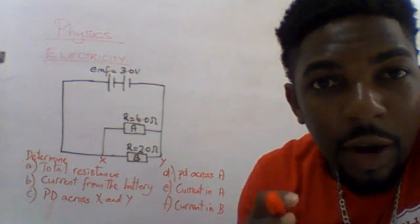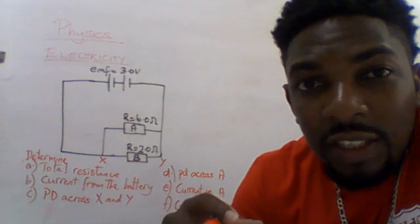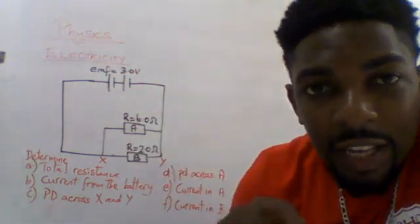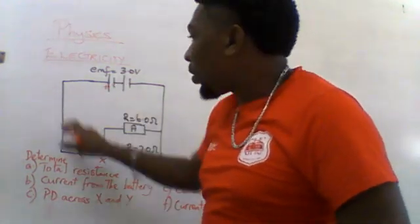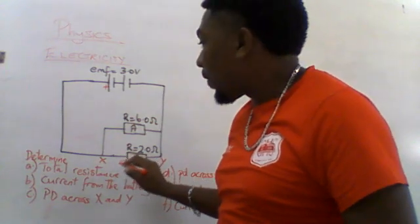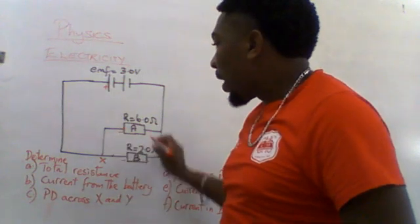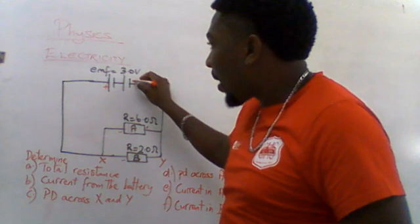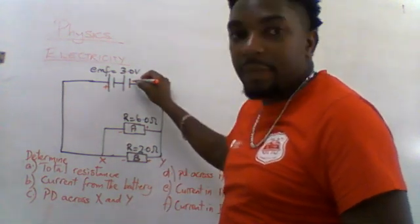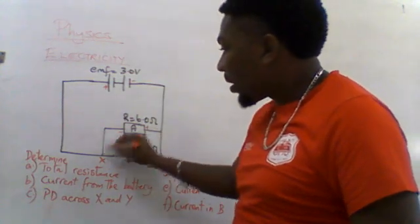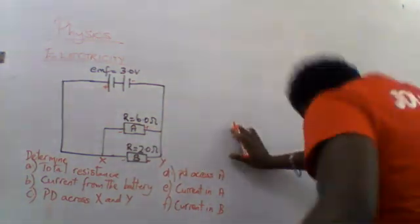In a series circuit, the components are connected positive to negative. But in a parallel circuit, the components are connected positive-positive and negative-negative. Starting from the positive side of the battery, it connects to the negative side, and the positive side loops back to negative. This connection pattern — positive-negative to negative and positive connected to positive — confirms it is a parallel circuit.